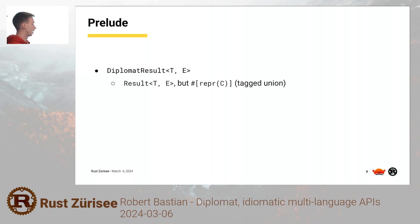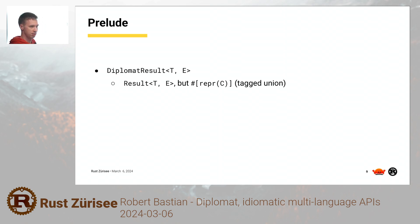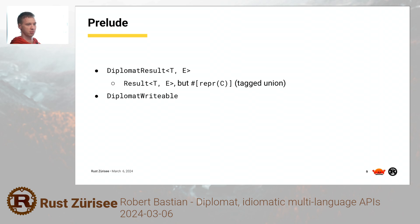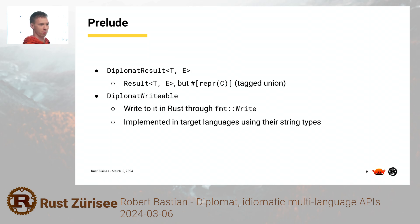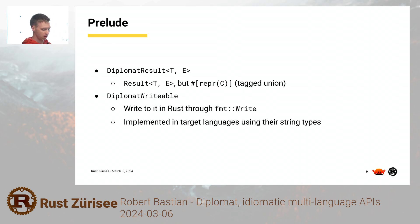The second part is the prelude. It contains things like diplomat_result, because the Rust result type has the Rust ABI, which is unstable — so you can't just pass it to C. Instead, diplomat_result is a tagged C union with a little Boolean: okay or not. Then we have diplomat_writable, which abstracts over strings. In Rust it implements fmt::Write, so you can just use the write macros to write into it. It will write in the correct shape of your target language — in C++ it'll generate a string, and in other languages it might produce UTF-16, because some languages use UTF-16 internally. This can all happen while you produce the string, so you don't have to convert it later.